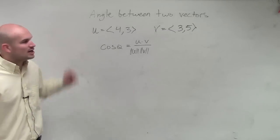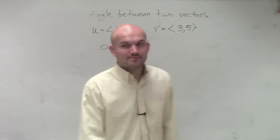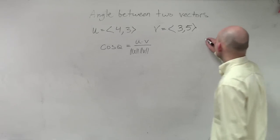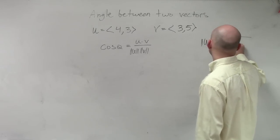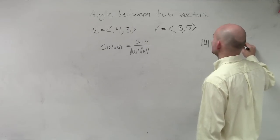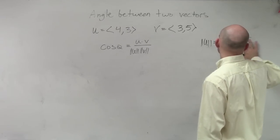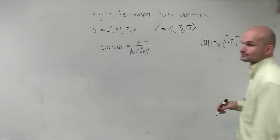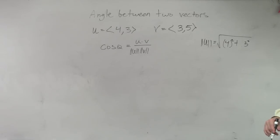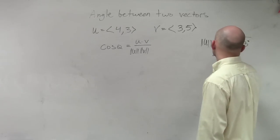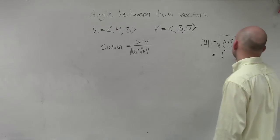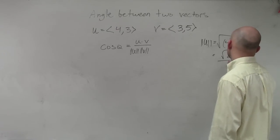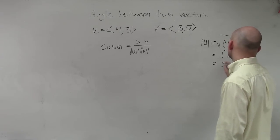Let's go ahead and find what the magnitude of u is. The magnitude of u is going to be the square root of 4 squared plus 3 squared. So we go 16 plus 9 is going to be 25, so that equals 5.